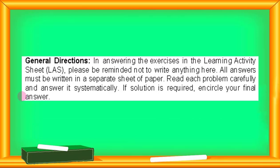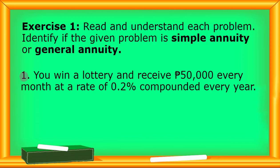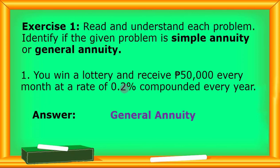For exercise number one, read and understand each problem and identify if the given problem is simple annuity or general annuity. For number one: you win a lottery and receive 50,000 pesos every month at a rate of 0.2% compounded every year. The payment interval is every month — monthly. The interest rate period is compounded every year — annually. Since monthly and annually are not the same, this is a general annuity.